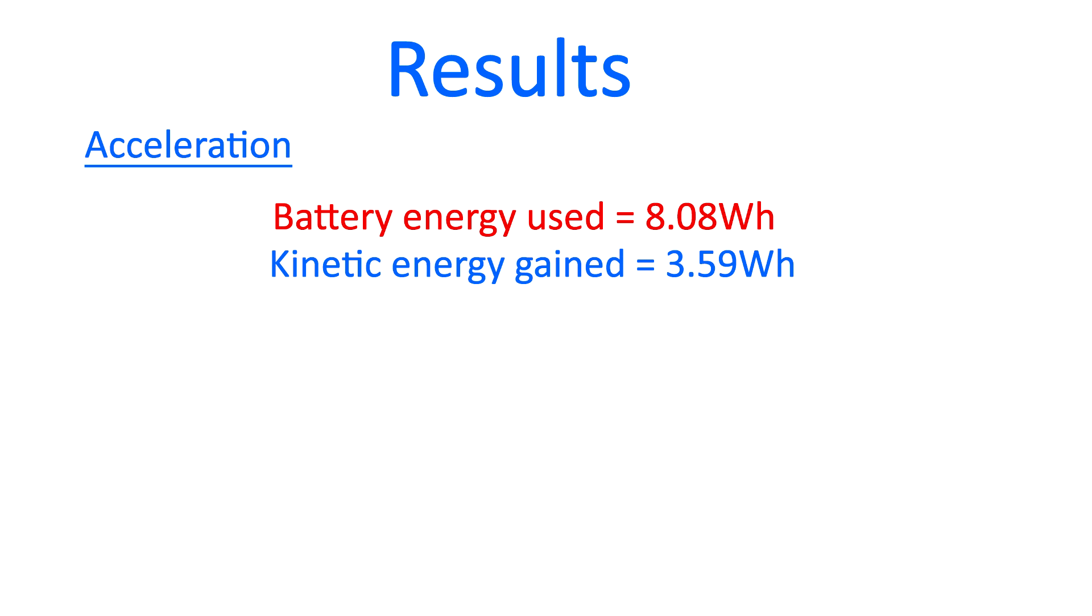So after repeating this test ten more times, here are the results. During the acceleration period, 8.08 watt hours of energy was discharged from the battery. Now as I know the mass of me and the bike and also the speed I was travelling, I can work out that the kinetic energy gained was 3.59 watt hours.